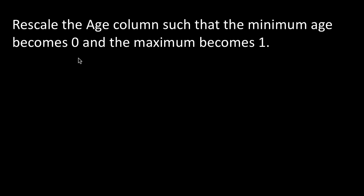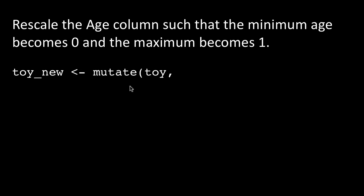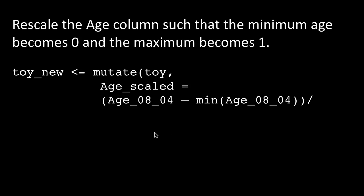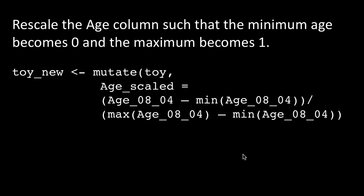So how do we do that? We've got a column called age_08_04 with a range of numeric values. We want to scale things so the lowest value becomes 0, the highest becomes 1, and every in-between value becomes something proportionate. It's quite easy — we use mutate to create a new column. So we say mutate(toy), and the new column age_scale equals age_08_04 minus the minimum of that column, divided by maximum minus minimum.